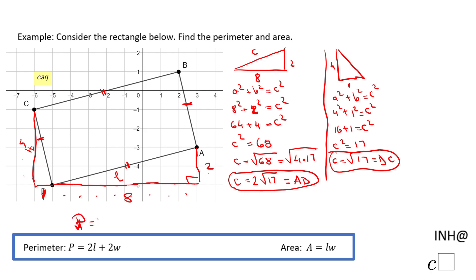The perimeter is 2 times l, which is 2 times 2√17, plus 2 times w, which is 2 times √17. If we multiply: 2 times 2 is 4, so we have 4√17 plus 2√17.